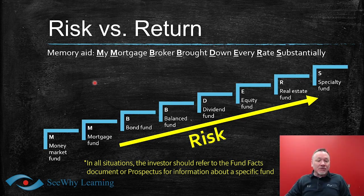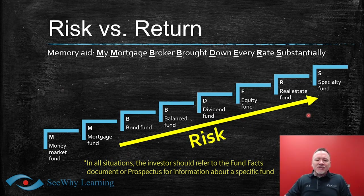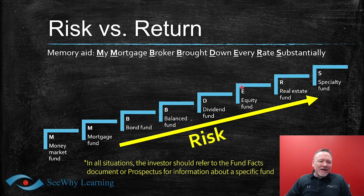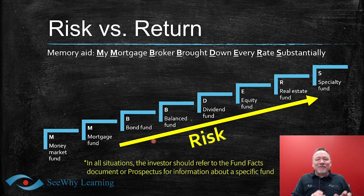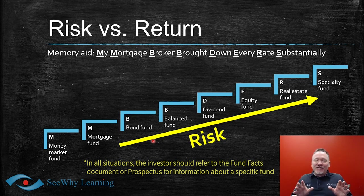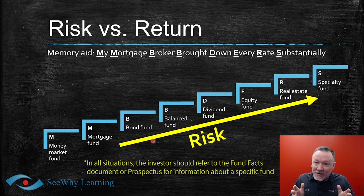One final point on this chart: the risk line doesn't look all that steep here, but it's actually much steeper than the chart can show. A bond fund is not just twice as risky as a money market fund — it's more so. A dividend or equity fund is a lot more risk than a bond fund, not just a little more. A specialty fund is significantly more risk than an equity fund or balanced fund. Keep in mind: if you want higher returns, you generally have to take more risk, but nothing is guaranteed.